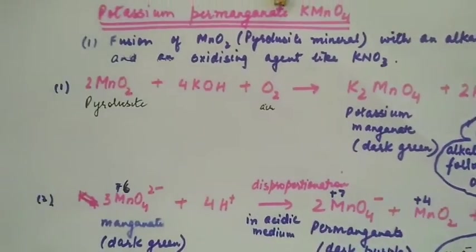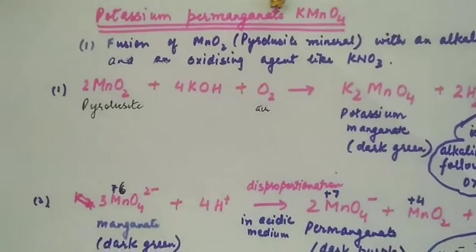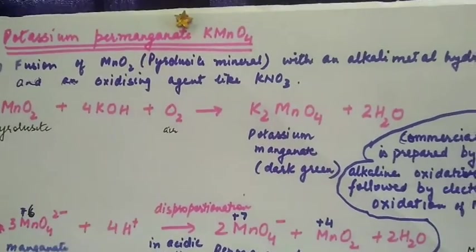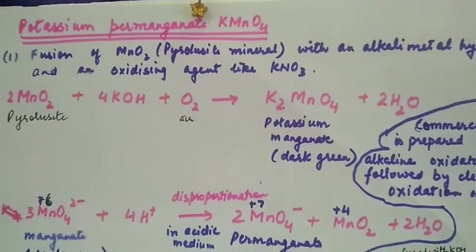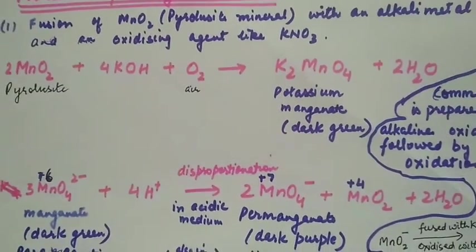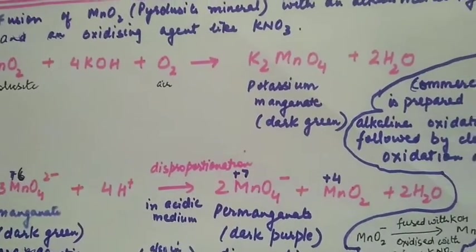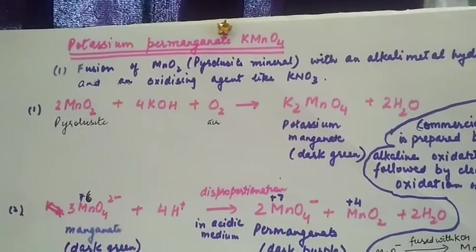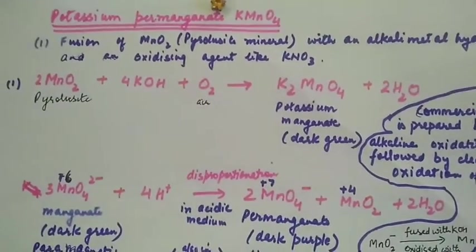In this, we can take alkali like potassium hydroxide or potassium carbonate. Similarly, instead of air as the oxidizing agent, we can use oxygen-rich compounds like potassium nitrate or potassium chlorate.